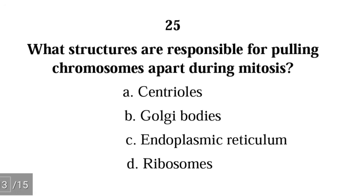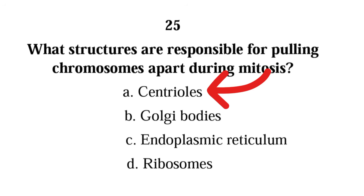Question 25: What structures are responsible for pulling chromosomes apart during mitosis? A) centrioles, B) Golgi bodies, C) endoplasmic reticulum, D) ribosomes. The correct answer is A) centrioles. Centrioles are components of the centrosomes that help with the formation of spindle fibers that pull chromosomes apart during mitosis.